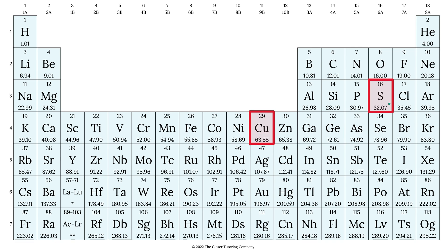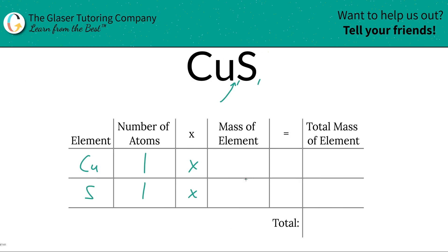So copper's mass is 63.55, sulfur is about 32.07. So that's what we're going to plug in, 63.55, 32.07.